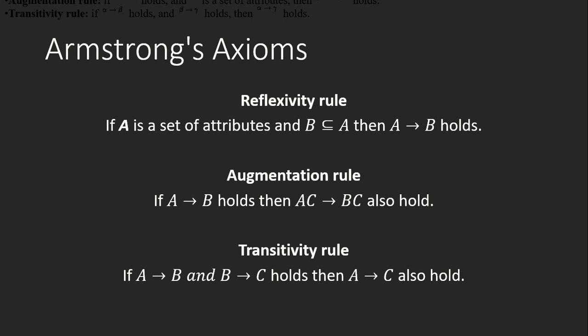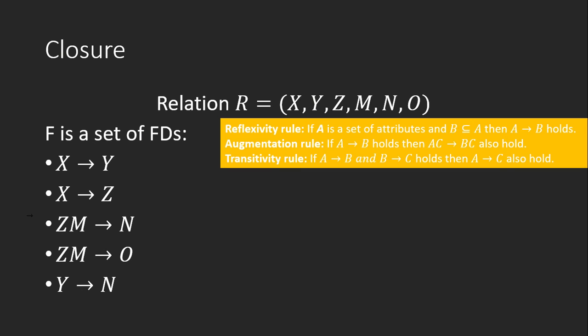The third rule is the transitivity rule: if A → B and B → C hold, then A → C also holds. This transitivity rule comes from algebra.